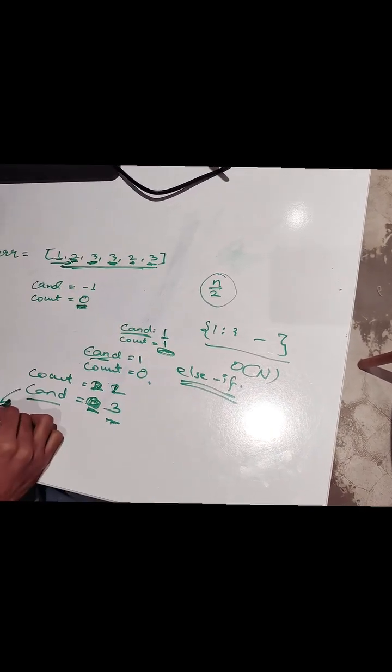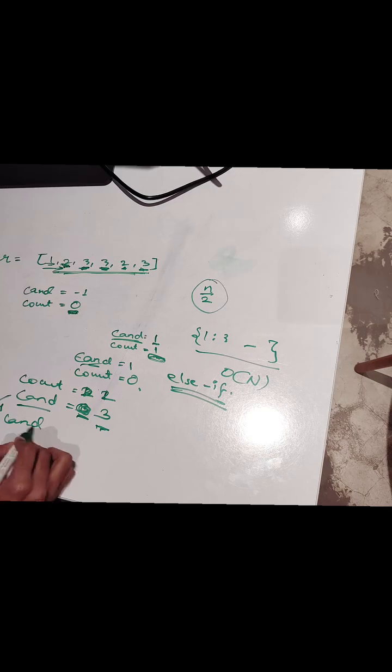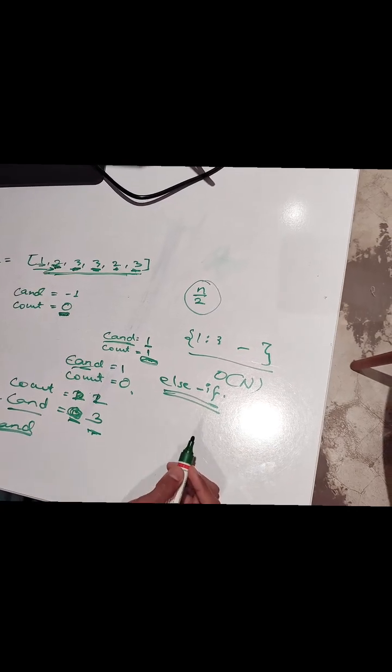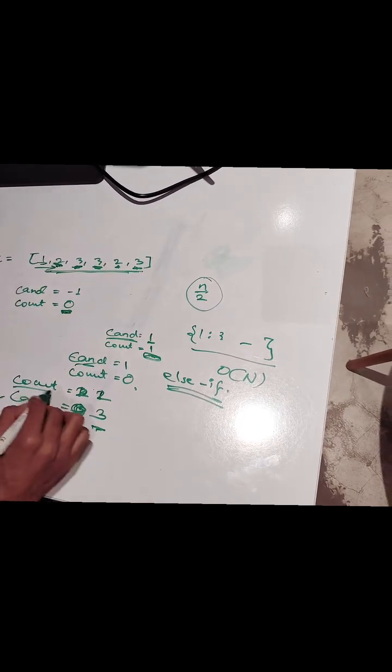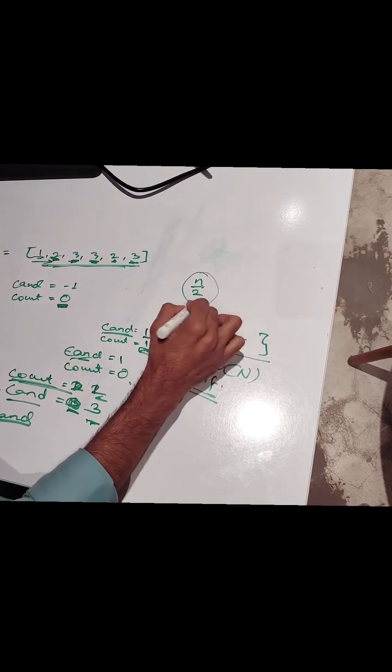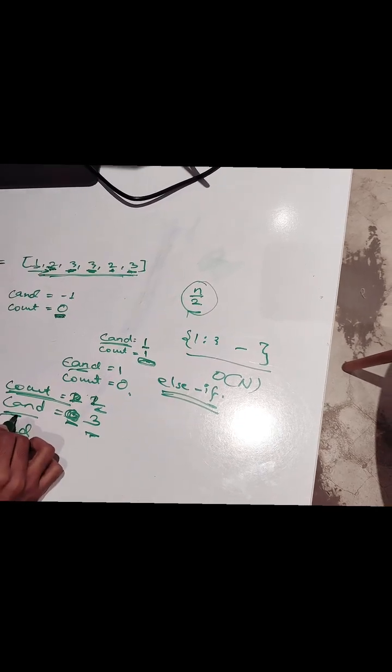And array is ended. So we just simply return this candidate. And any other case we will make another loop, another condition as well. If count is greater than n by 2 at any stage, we will just simply return this candidate.